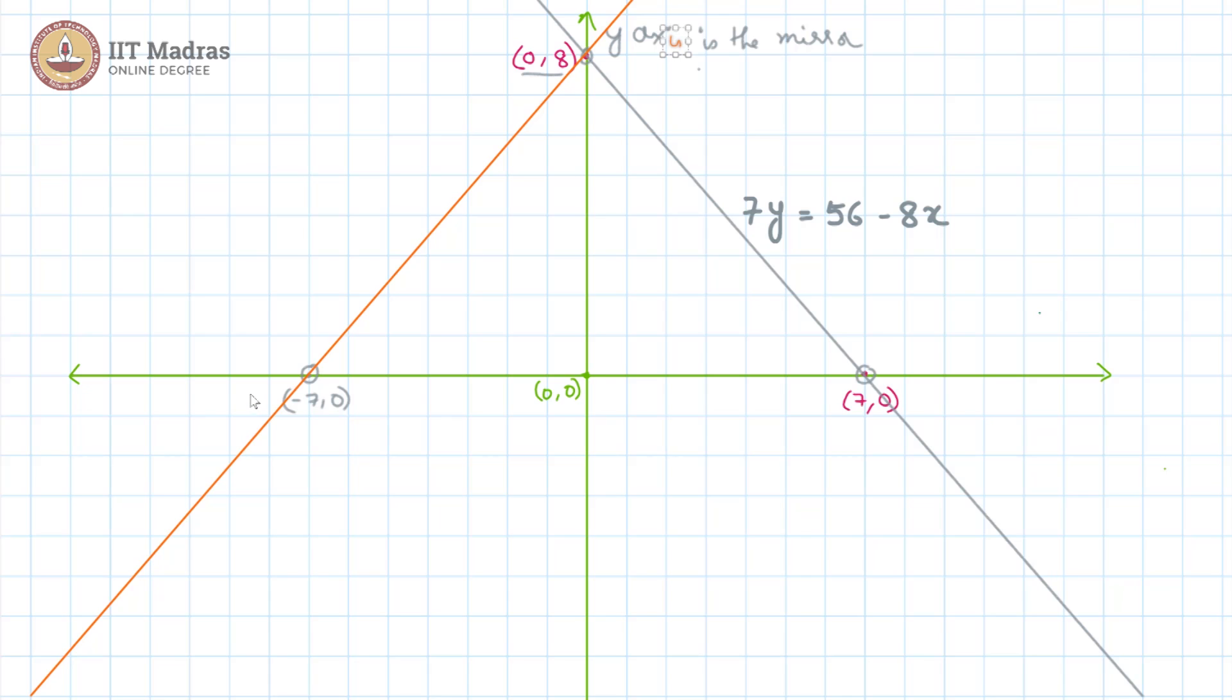And for finding the equation of this line, we can use the two-point form. And when we apply the values, we get y minus 0 by x plus 7 is equal to 8 minus 0 by 0 plus 7 which gives us 7y is equal to 8x plus 56.